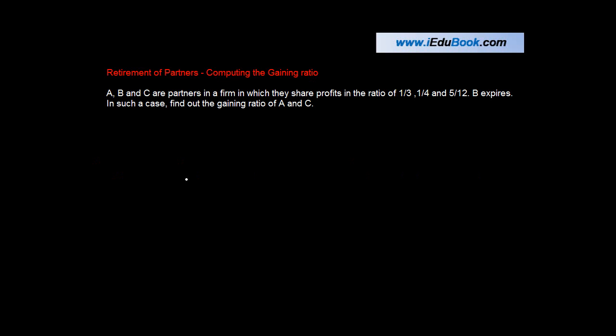Retirement of a partner: computing the gaining ratio. Let's say these are three people A, B, and C. In this case, if one of these partners expires, his share gets distributed amongst the other two partners.